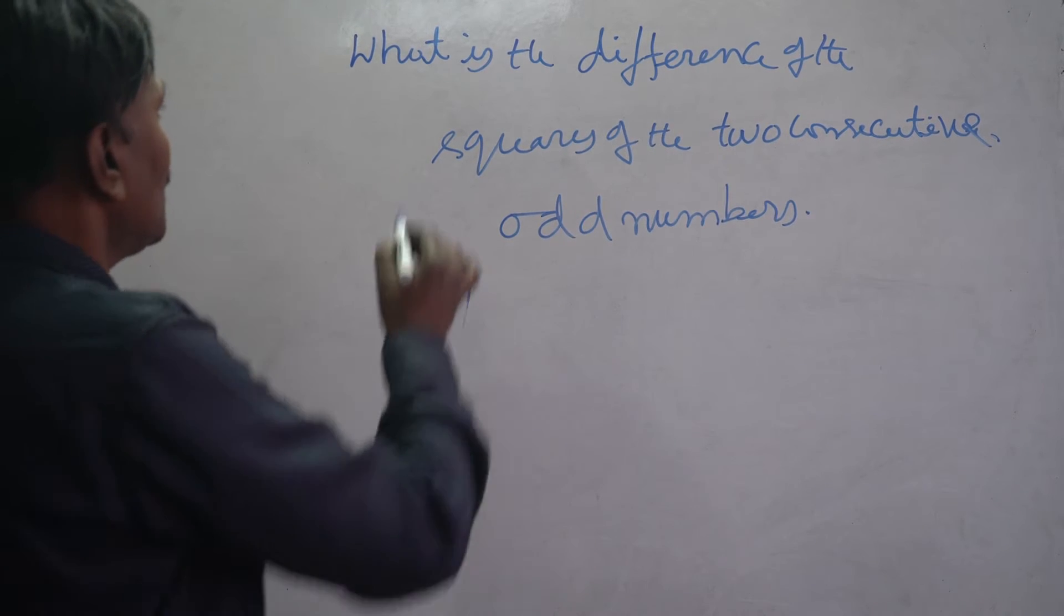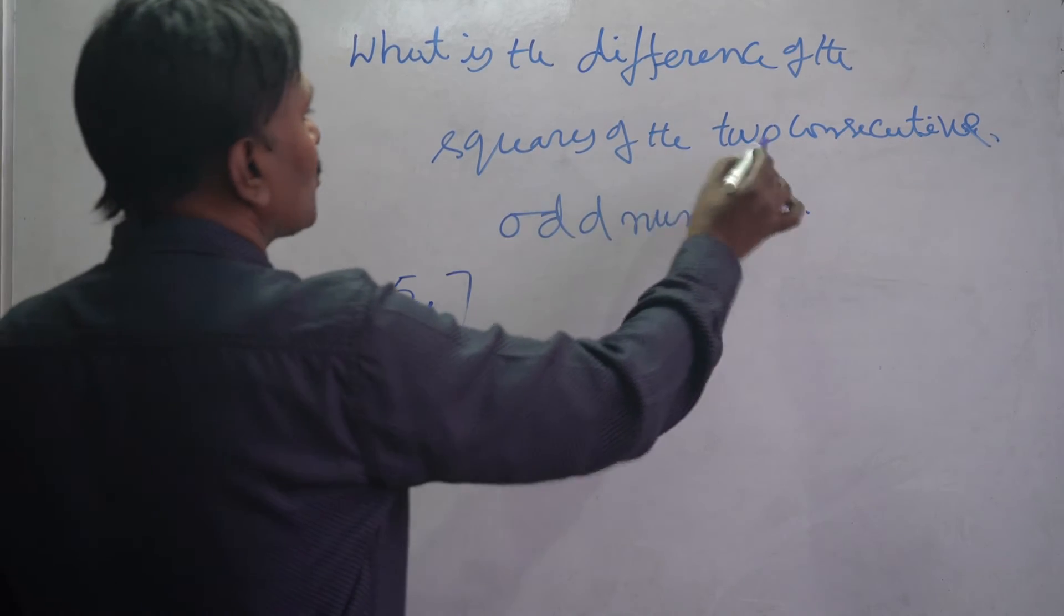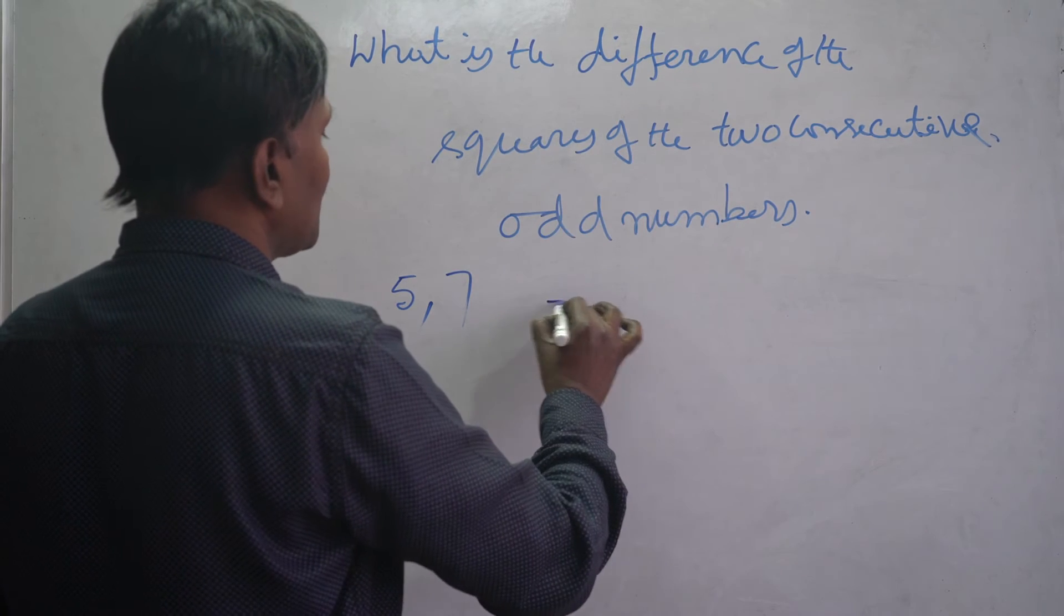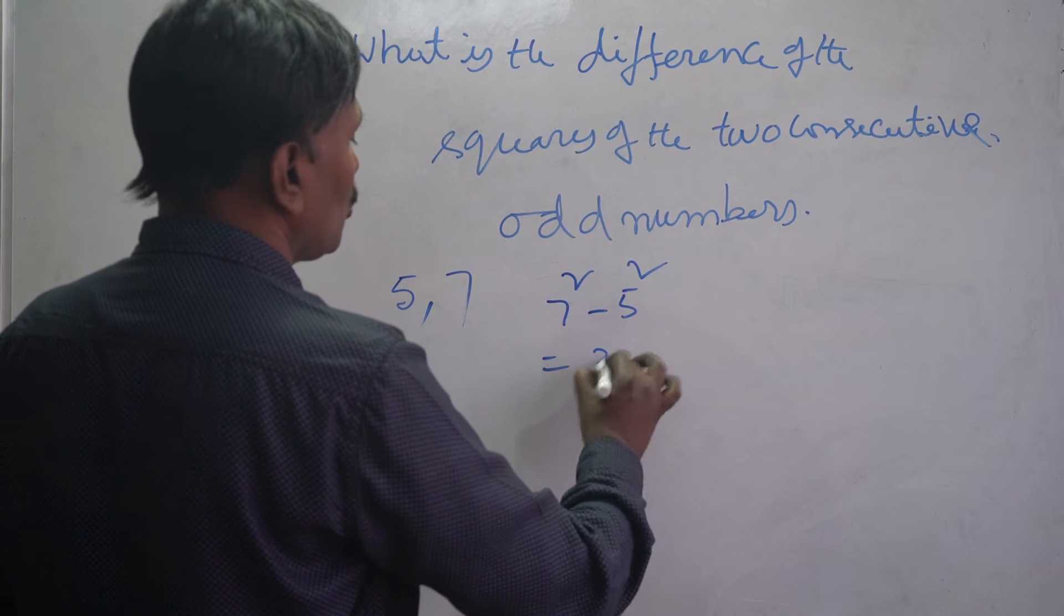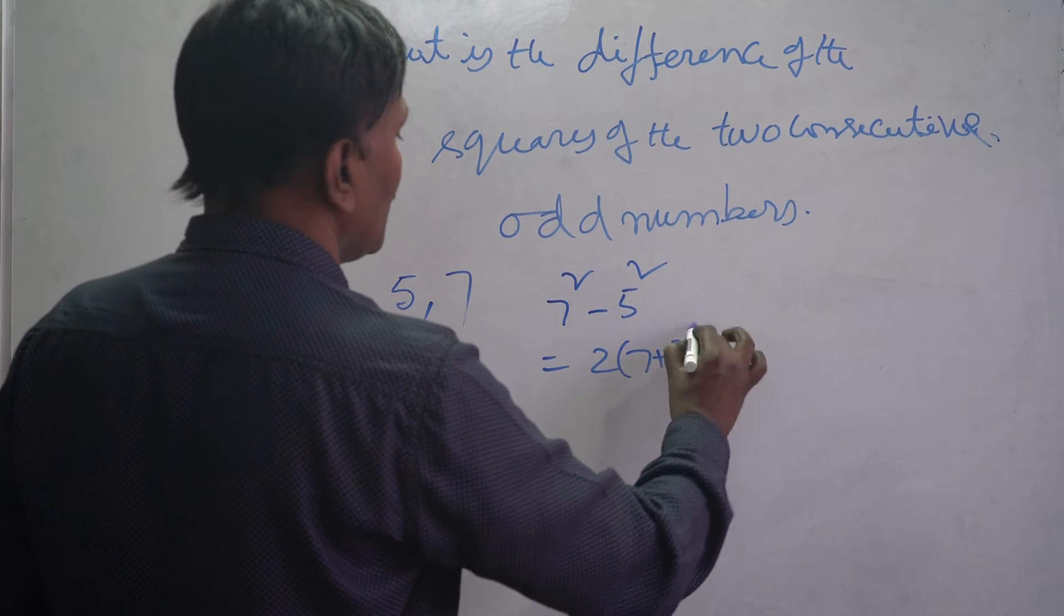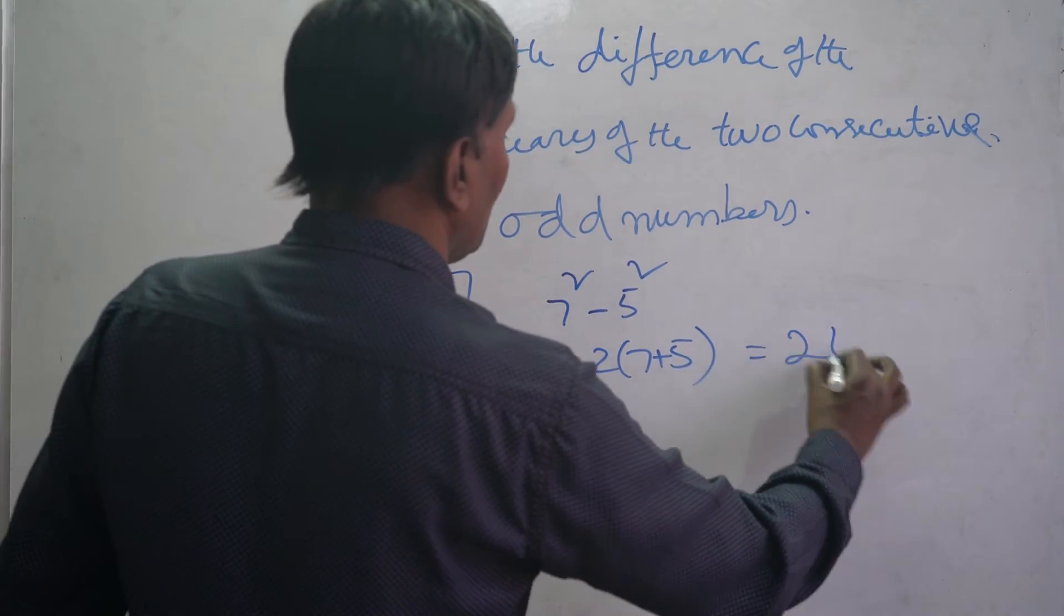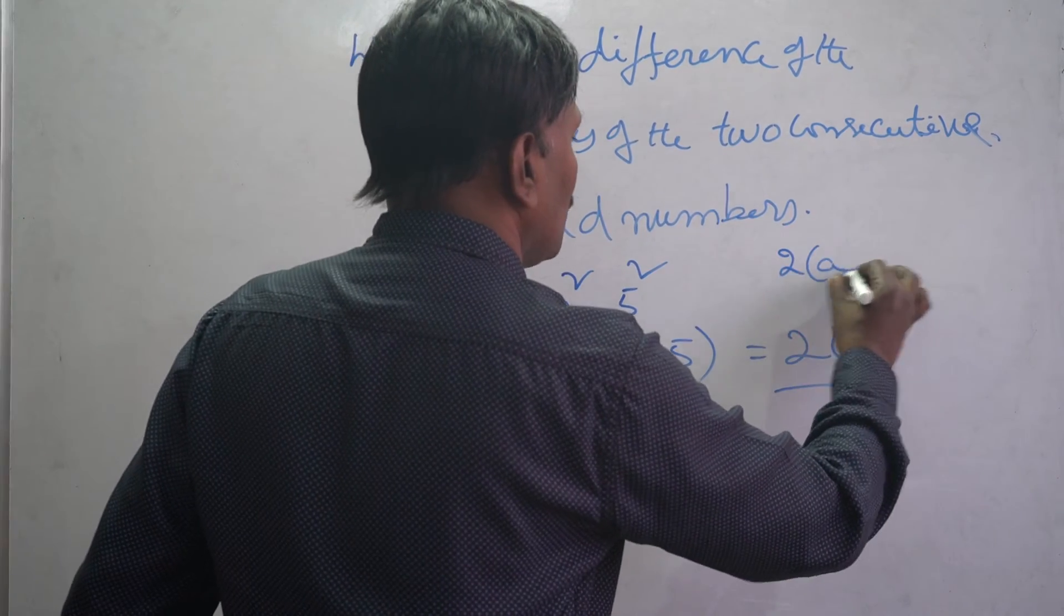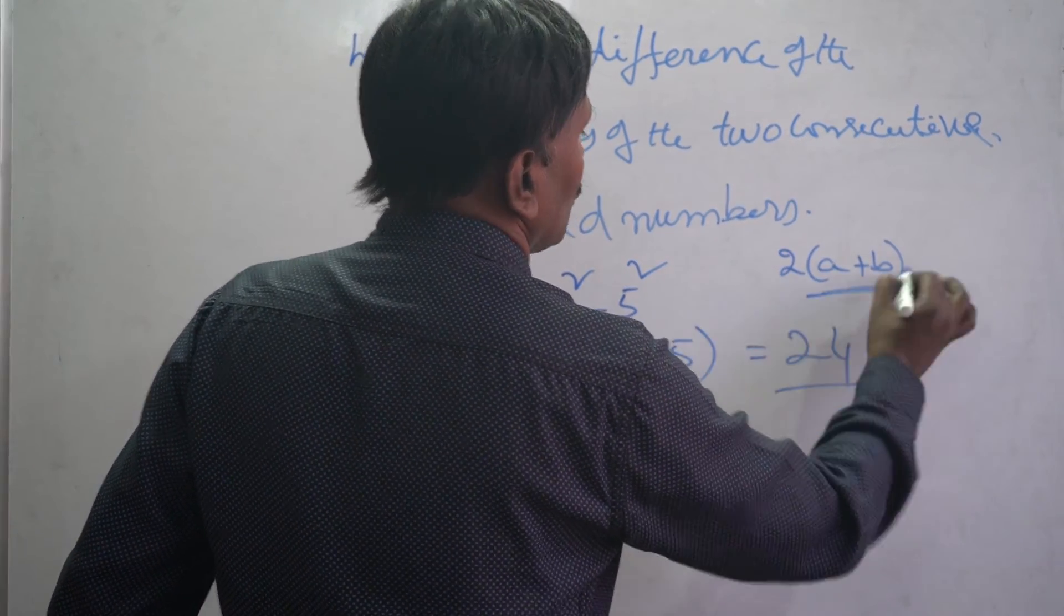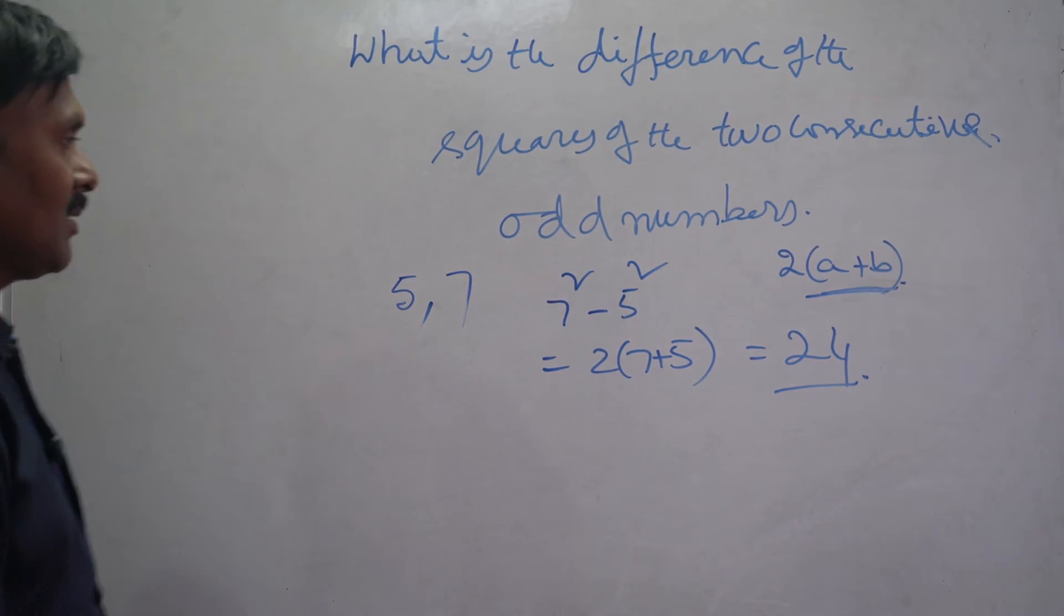What is the difference? 7 square minus 5 square, this is 2 into 7 plus 5, that is 24. So the output is, what is the answer? 2 into a plus b.